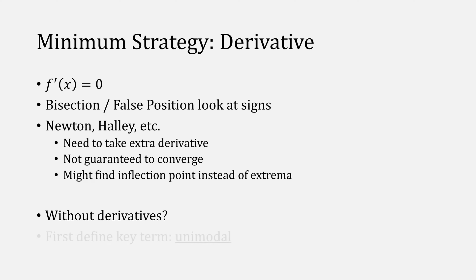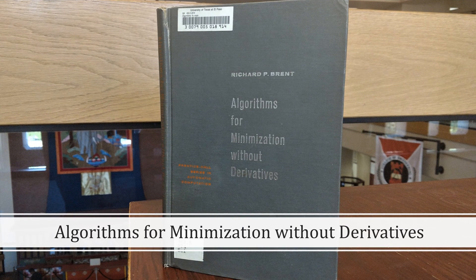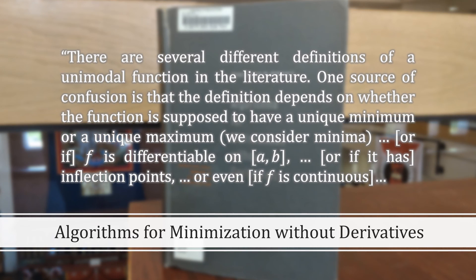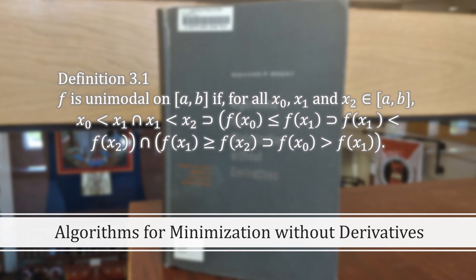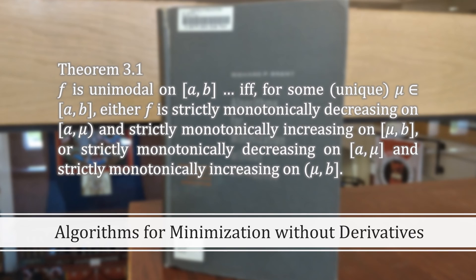Is there a way to do this without derivatives? There is, but first let's define a key term called unimodal. For reference, let's look at algorithms for minimization without derivatives — you may recall this book from my video on Brent's method. Brent writes: there are several different definitions of a unimodal function in the literature. One source of confusion is that the definition depends on whether the function has a unique minimum or a unique maximum, or if f is differentiable on the interval a to b, or if it has inflection points, or even if f is continuous. Brent gives this theorem that basically says that f is unimodal for some interval if f is only decreasing to a point and then after only increasing.